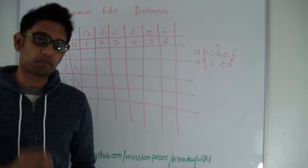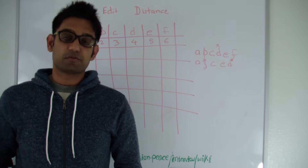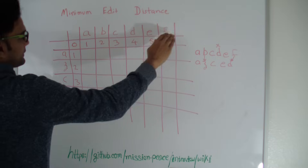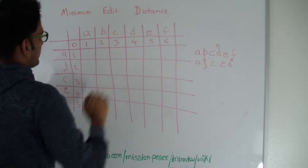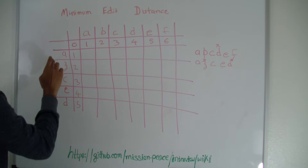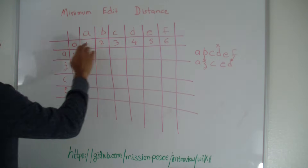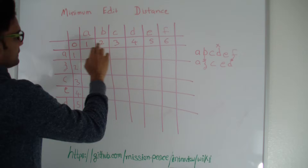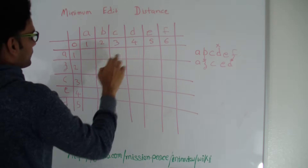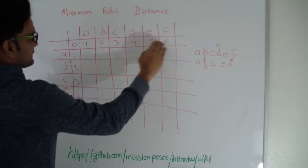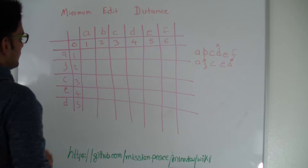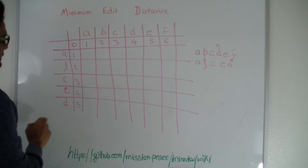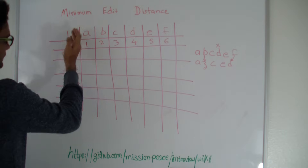So how do we find the minimum number of operations and what are those operations? We will use dynamic programming to solve this question. I have the first row as the first string ABCDEF and the first column as AZCED. There is an extra column and extra row saying that if I had a string ABCDEF on one side and a null string on the other side, it would take six edits to convert it. And if I had a null string and AZCED, it would take five edits.